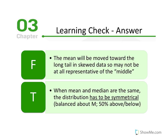The first statement is false — the mean will be moved toward the long tail in a skewed distribution, so it may not be representative of the middle at all. Whenever we have extreme scores, the mean is adversely affected and pulled toward those extreme scores, resulting in a value not representative of the center. The second was determined to be true: when the mean and median are the same, the distribution has to be symmetrical — balanced about the mean with 50% of scores above and below.